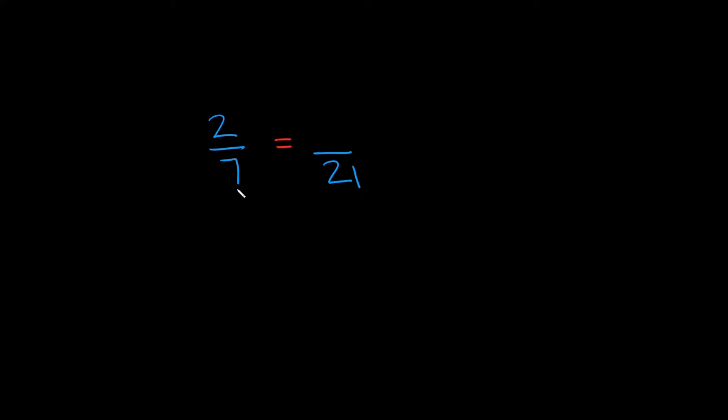So keeping that in mind, how can we get from 7 to 21? Well, if we multiply the bottom right here, 7 by 3, that would give us 21, right? But remember with equivalent fractions you have to multiply the top and the bottom by the same number. So if we're going to multiply by 3 down here we also have to multiply by 3 up here. Okay, so what's 2 times 3? That's equal to 6. Okay, so 2 sevenths is equal to 6 over 21. That would be your equivalent fraction.